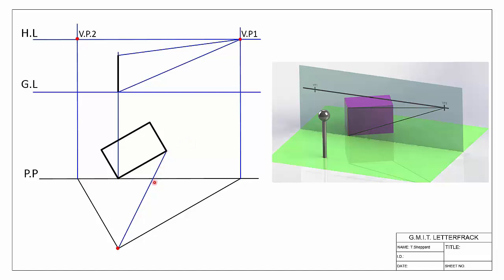To locate the back edge, we join the back corner down to our spectator, and where that line crosses the picture plane we project it up into our perspective view. That gives us the position for our back edge. In these questions, things generally break down into finding height and finding position — position is always found by joining the corner down to the spectator, where it crosses the picture plane, and projecting it up.